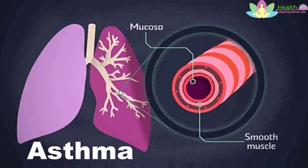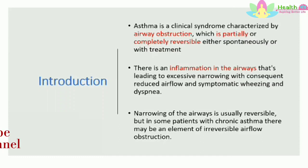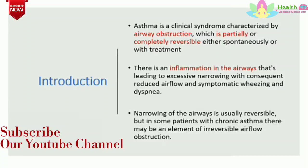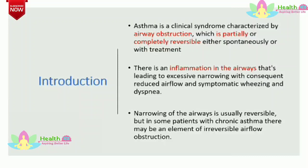Welcome to Health Mantra. The topic of discussion is Bronchial Asthma. Introduction. Asthma is a clinical syndrome, meaning it's a group of symptoms which consistently occur together. Asthma is characterized by airway obstruction which is partially or completely reversible either spontaneously or with treatment. There is inflammation in the airway leading to excessive narrowing with consequent reduced airflow and symptomatic wheezing and dyspnea.